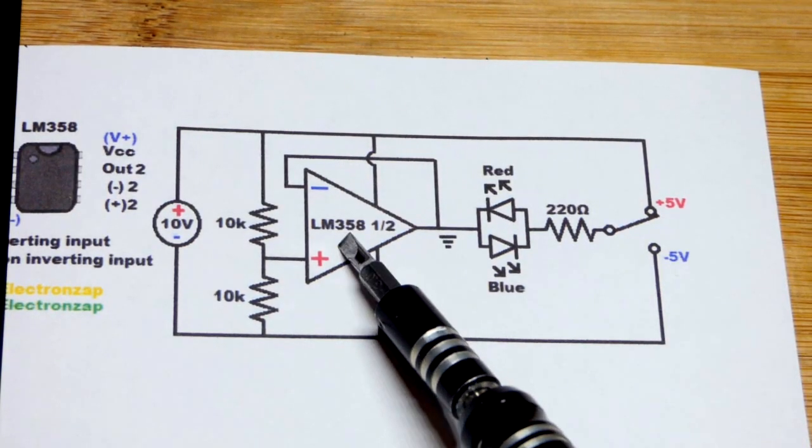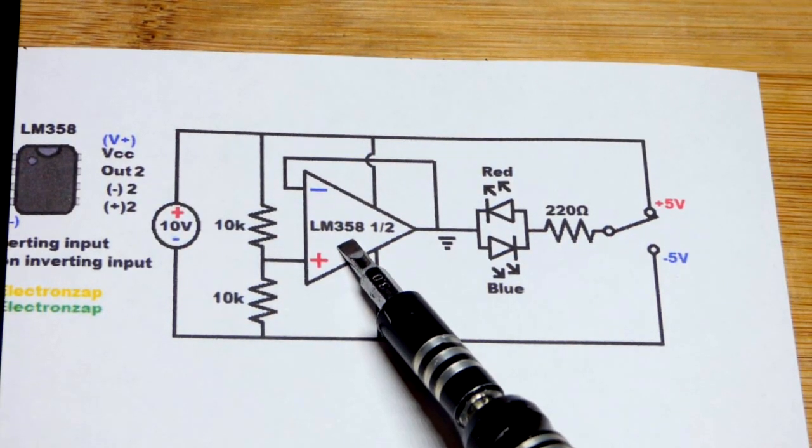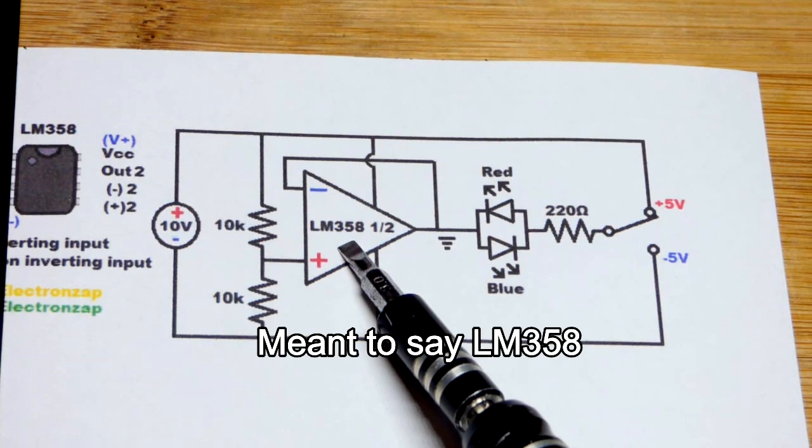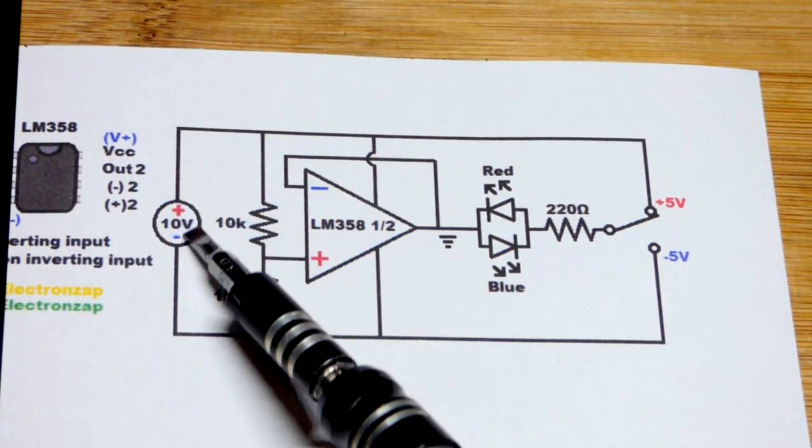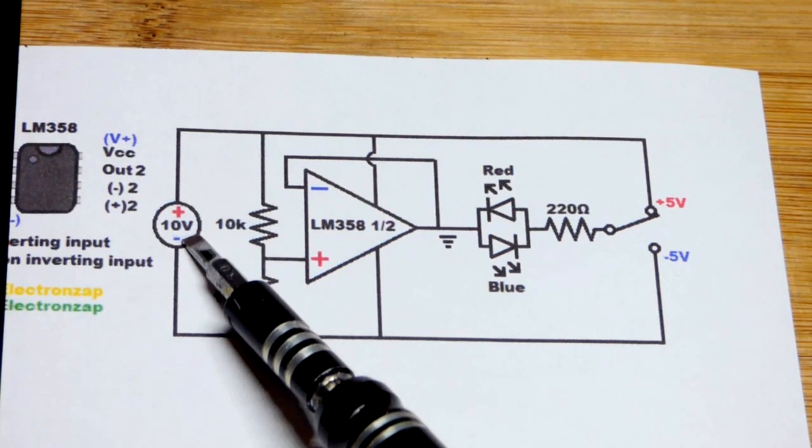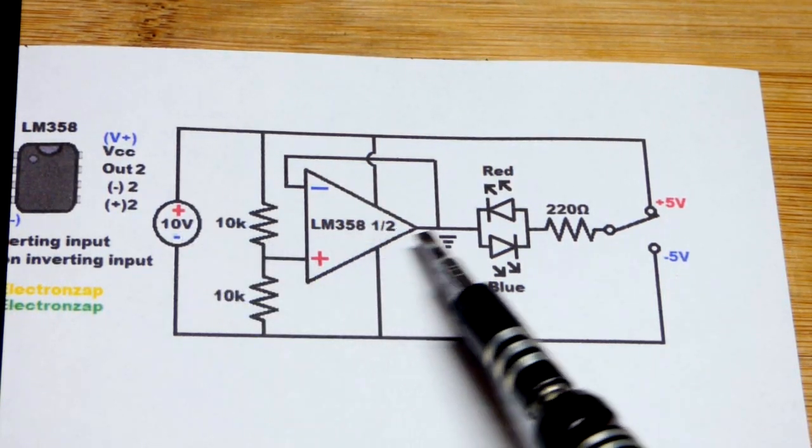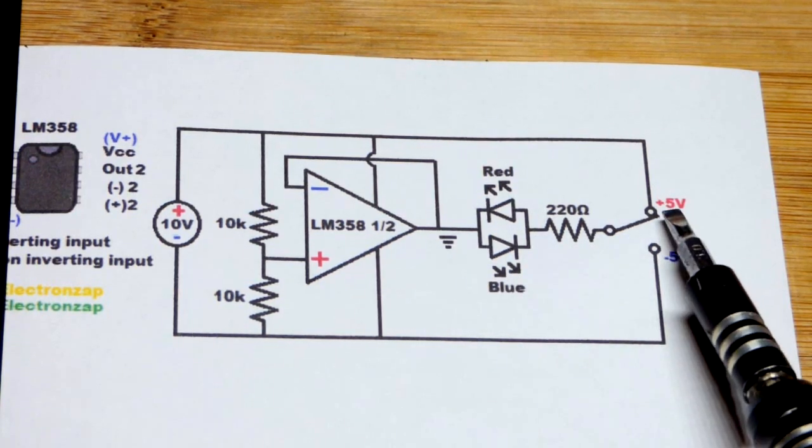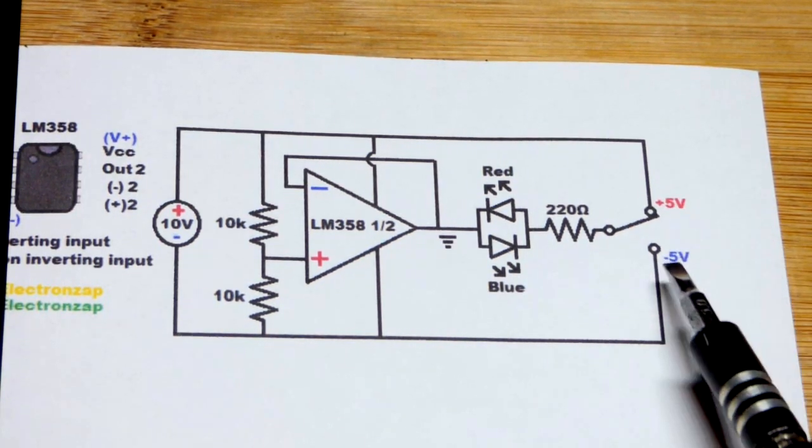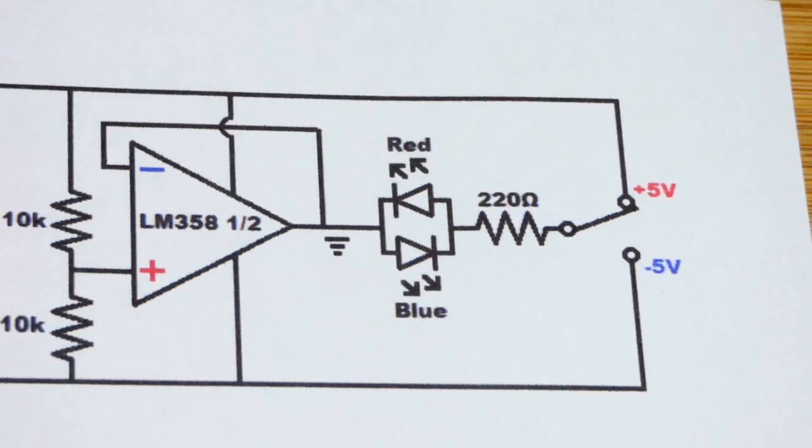Now in this video we're going to look at a circuit where we take an LM358 op-amp, one of the two on the integrated circuit, and we split 10 volts. So we're going to put ground in the middle of that 10 volts, and in relationship to ground we're going to have a positive 5 volts and a negative 5 volts.